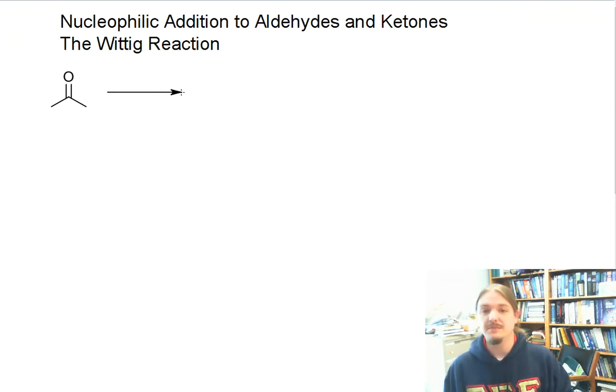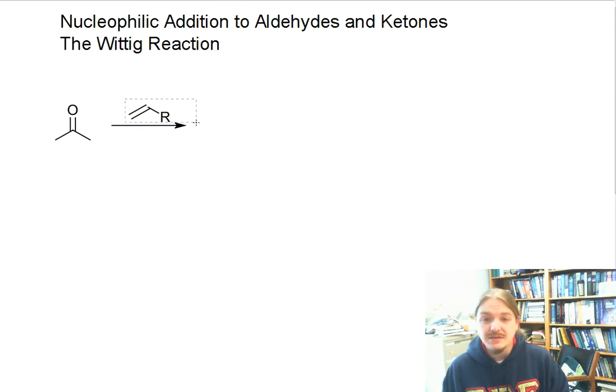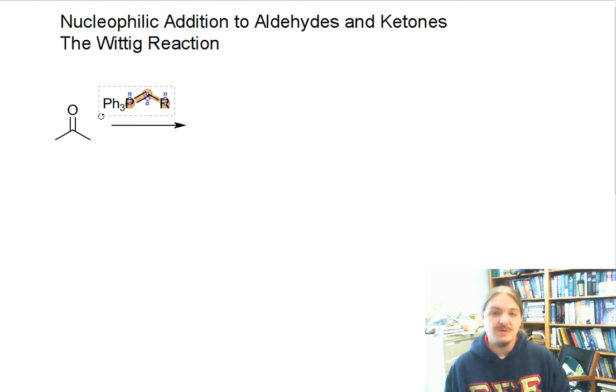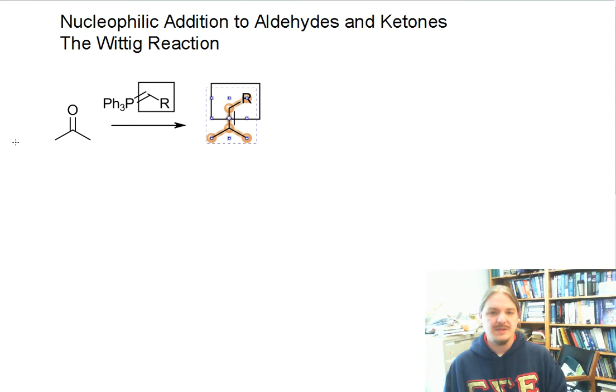I've been using acetone as my typical prototypical ketone with something called a phosphorous ylide. And it converts the aldehyde or ketone into an alkene, adding the carbon groups on the ylide to the, in place of the carbonyl oxygen.